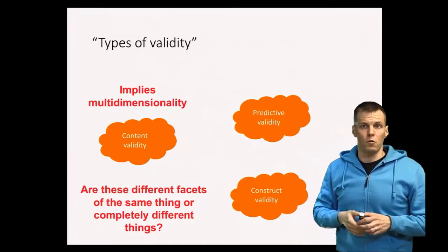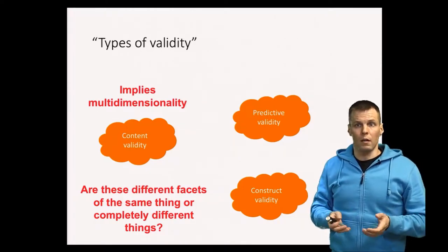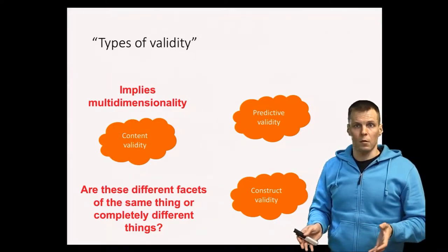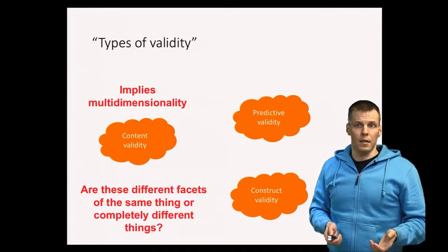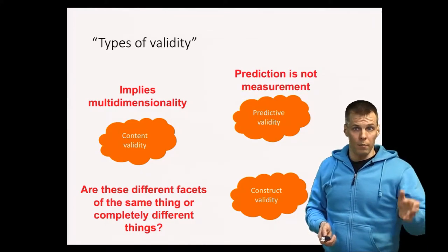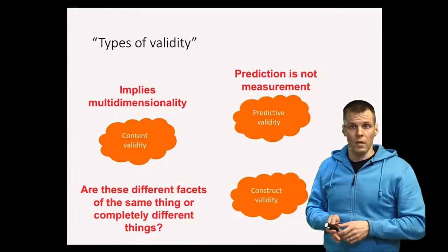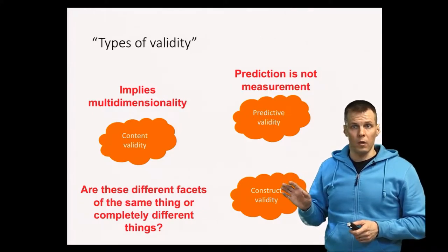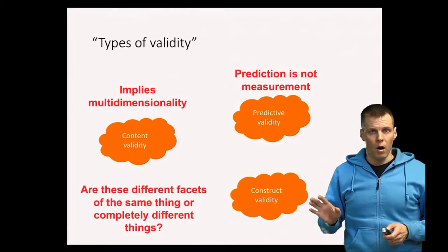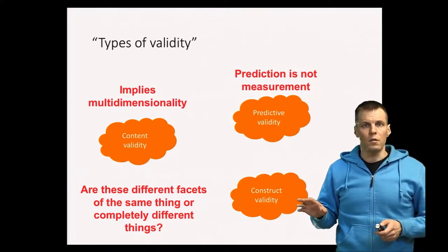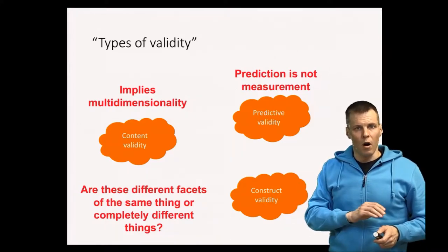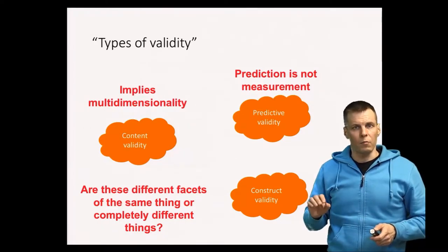Content validity is mostly focused on educational measurement or contexts where you have to summarize people's capabilities or skills in a certain domain with a single score. Predictive validity is about prediction or forecasting — can you, based on your data, say something about the future? It is not measurement; prediction and measurement are two different things. A typical example is college entry exams, which are not designed to measure who is smart, but to predict who is going to do well in college and who is going to graduate.